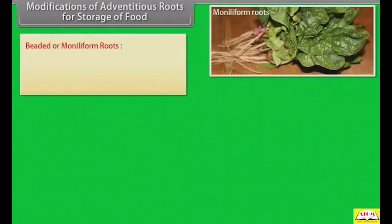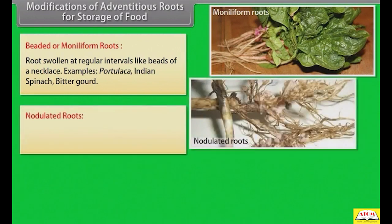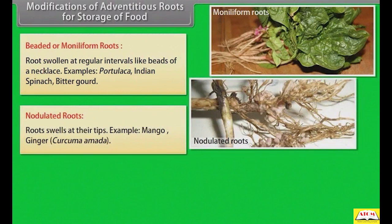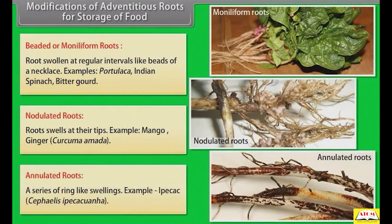Beaded or moniliform roots are swollen at regular intervals like beads of a necklace. Examples: Portulaca, Indian spinach, bitter gourd. Nodulated roots swell at their tips. Example: mango ginger. Anulated roots have a series of ring-like swellings. Example: ipecac.